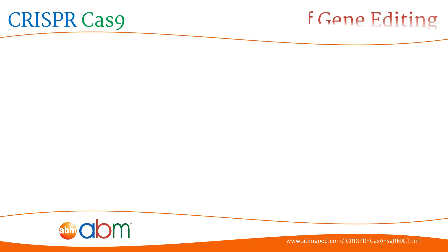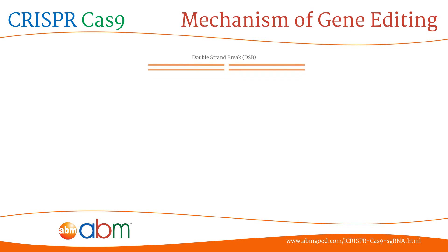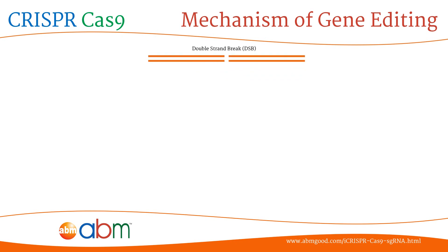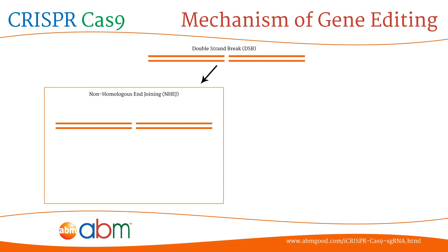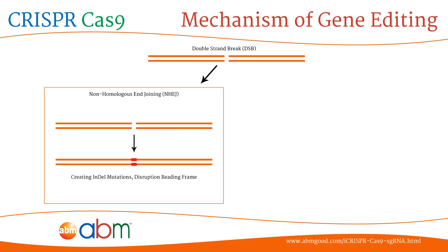The double strand break created by Cas9 is then repaired by the cell's own repair mechanism. The non-homologous end-joining DNA repair pathway is used in the absence of a repair template. With this pathway, the ends of the DNA are simply ligated back together, which usually leads to introduction of small insertion or deletion mutations that disrupt the reading frame of the desired gene.